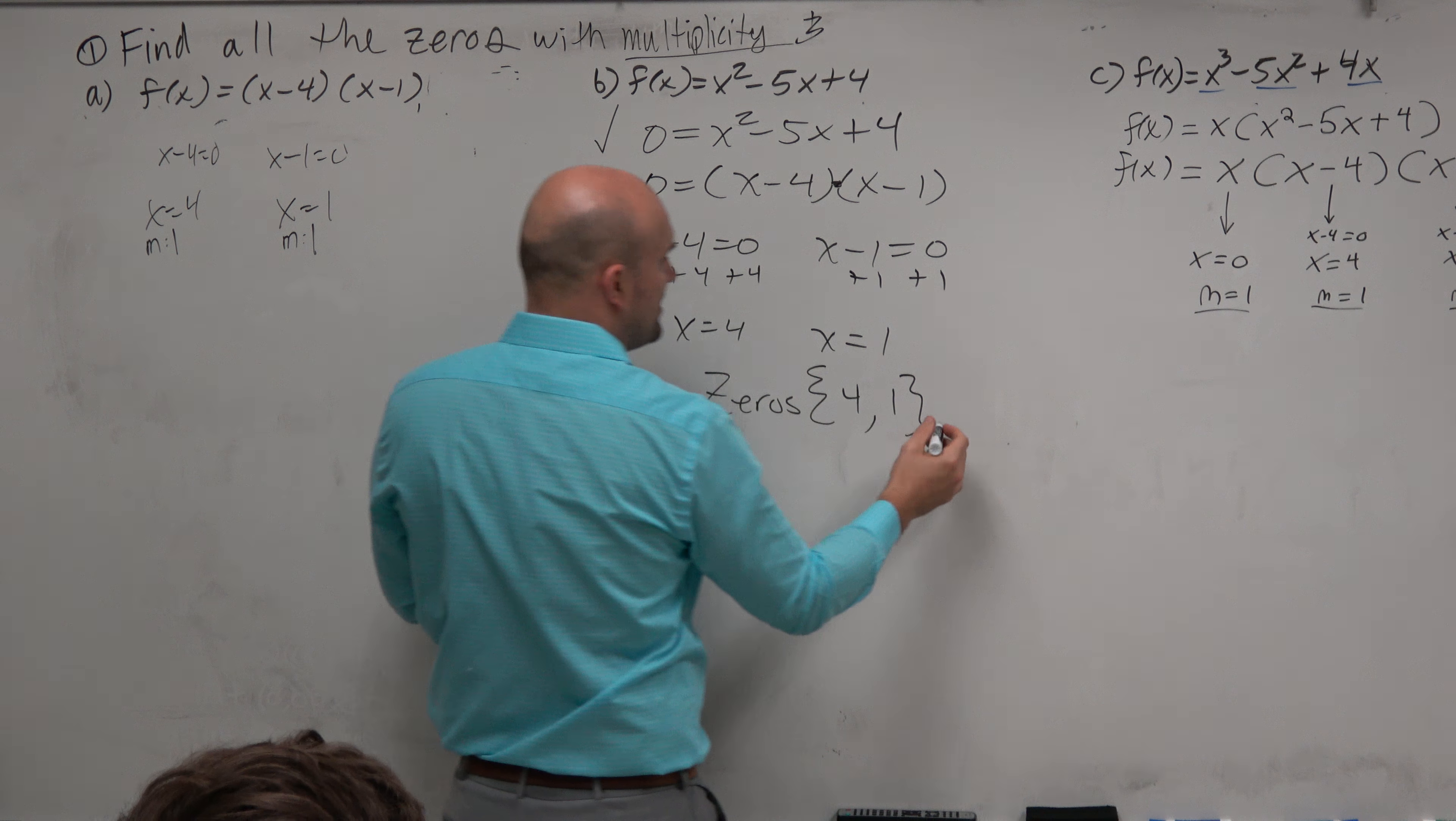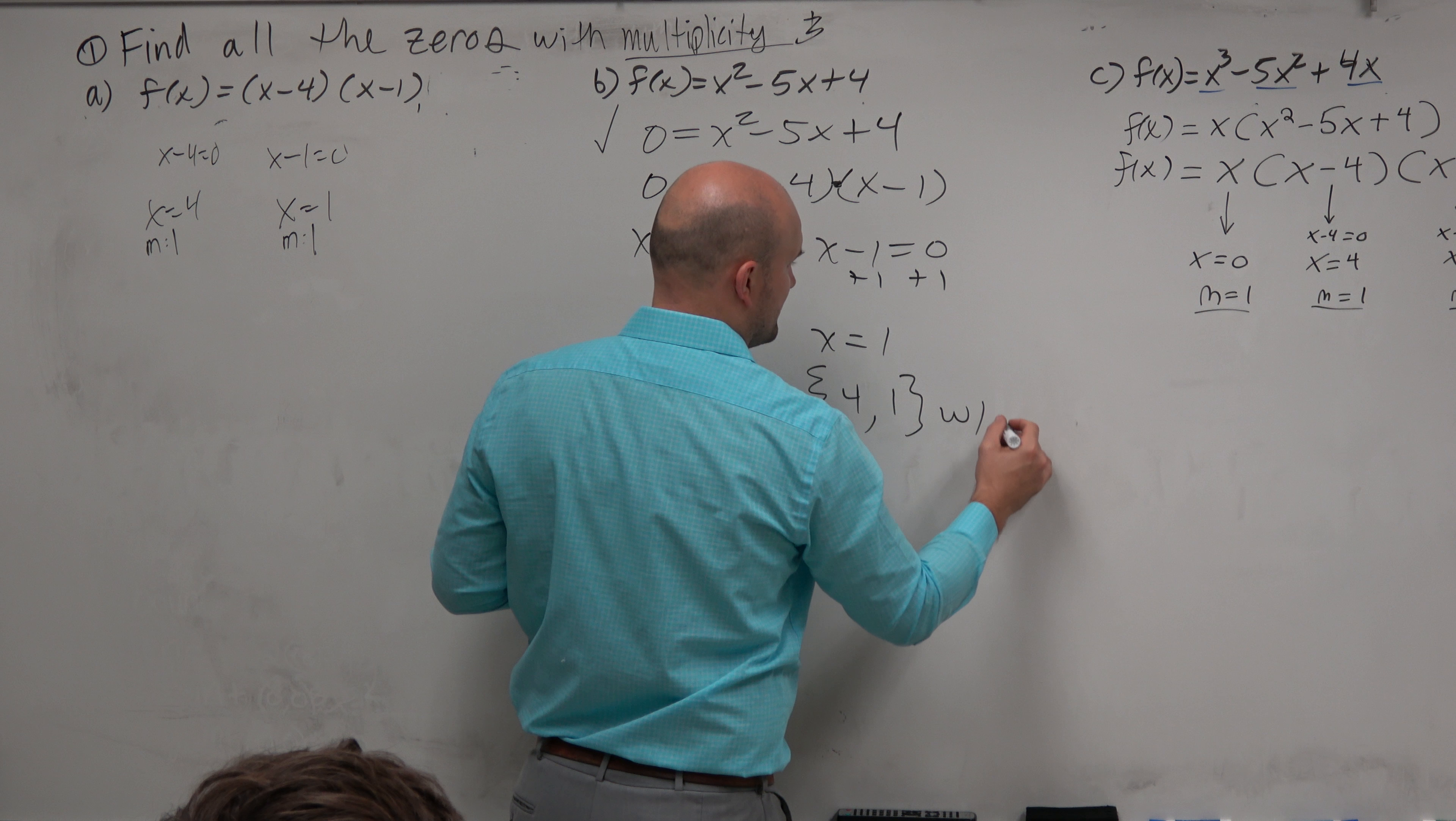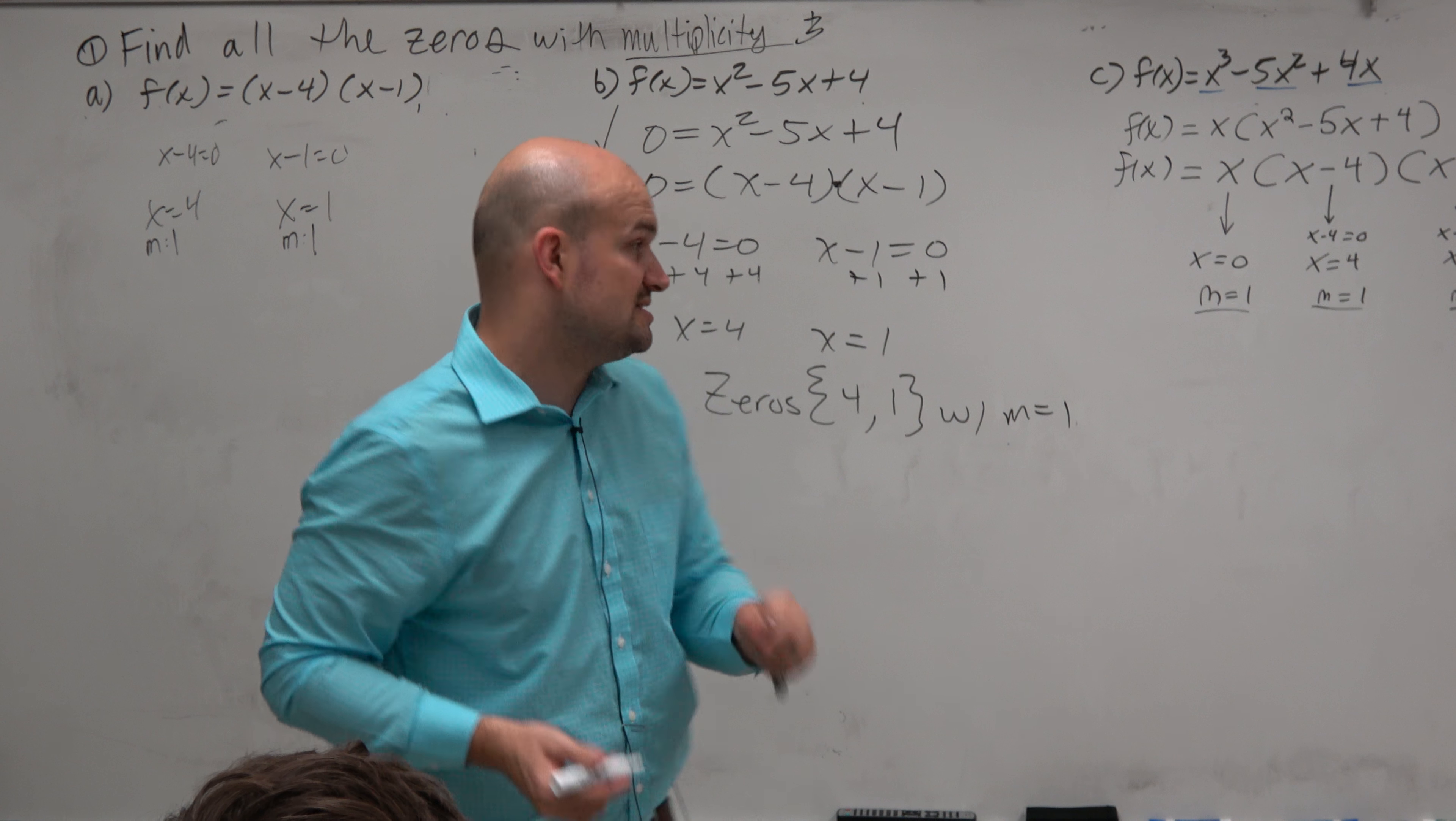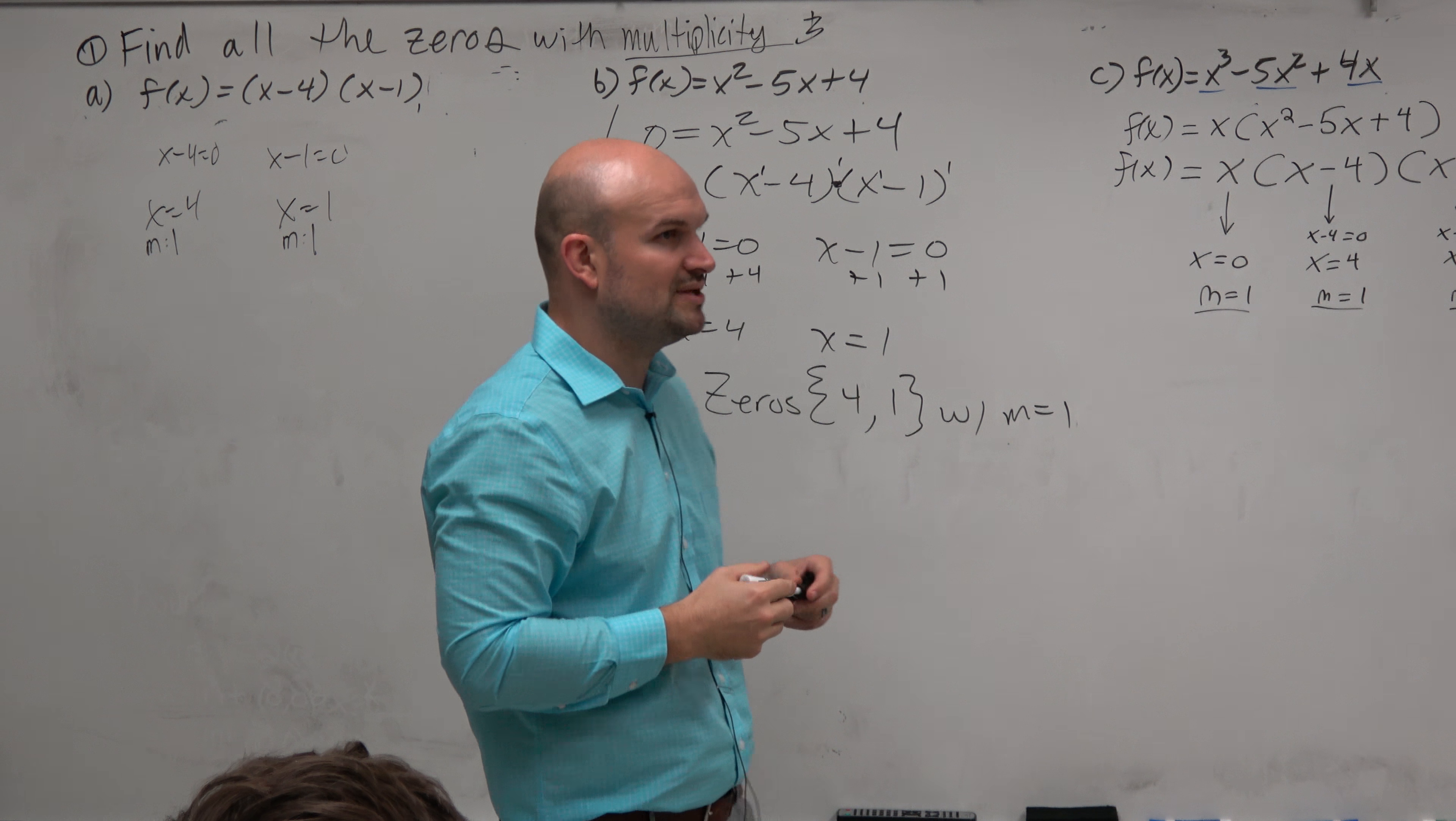And then I can say both of them have a multiplicity equal to 1. When you say, well, how do you know the multiplicity is 1? Because the definition of multiplicity, when you have linear factors, the power of their factor is the multiplicity.